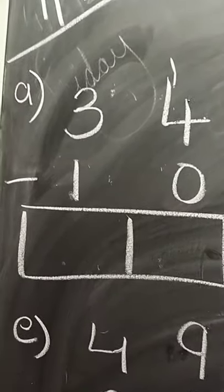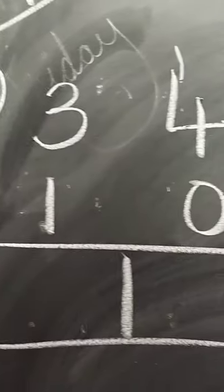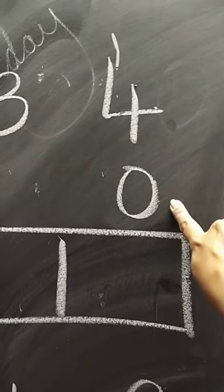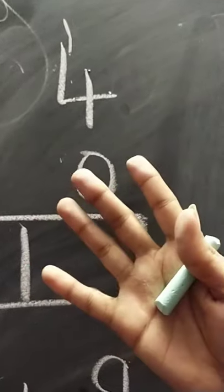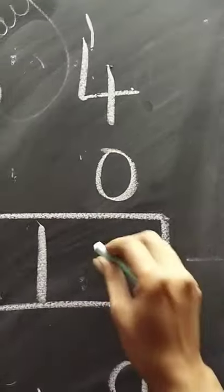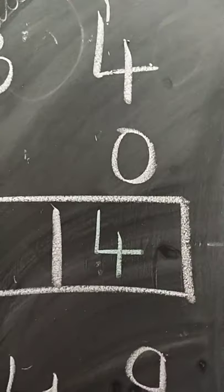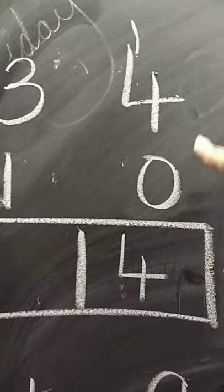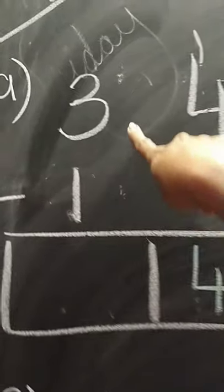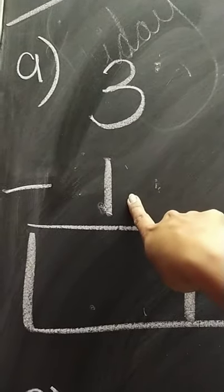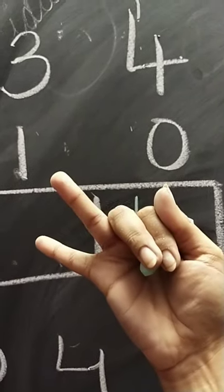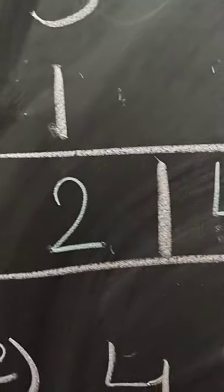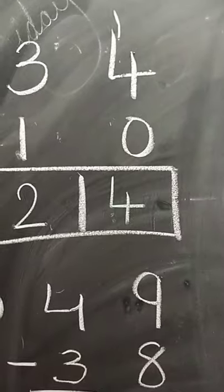So kids, you can see here. First one is A. We will subtract — here we have 4 and out of 4 we will be subtracting 0. So, 4 minus 0 will be 4, the same number. 0 here doesn't carry any value. Now, 3 minus 1. The difference is 2. So, the answer we got is 24.